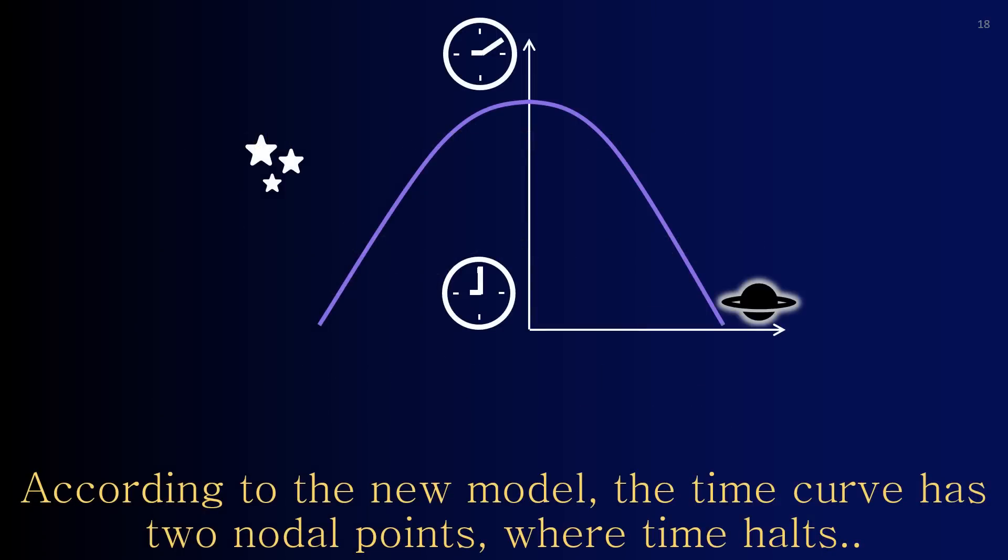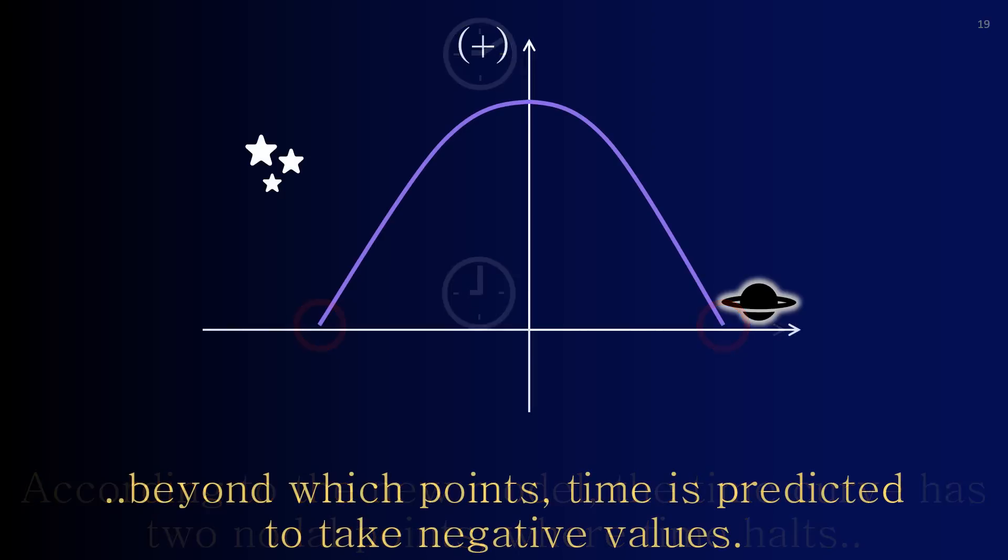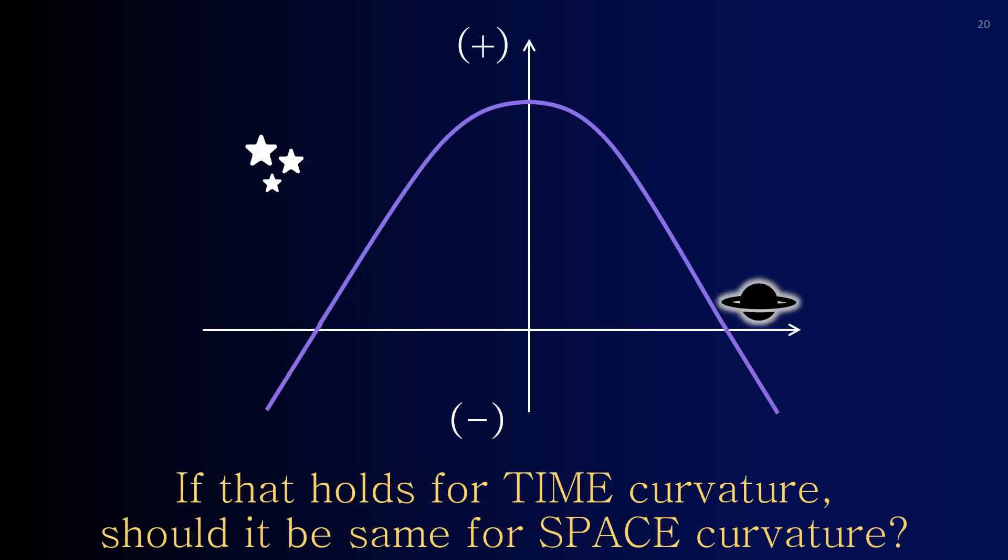According to the new model, the time curve has two nodal points where time halts. Beyond which points, time is predicted to take negative values. If that holds for time curvature, should it be same for space curvature?